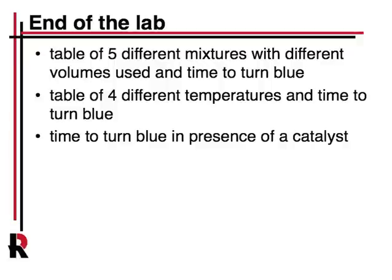By the end of the lab, you should have five different mixtures at the same temperature where you used different concentrations and recorded how long it took to turn blue. You should also have a separate table with four different temperatures and the time it took to turn blue, and finally the time it took to turn blue in the presence of a catalyst. Depending on your instructor, you may get a worksheet. Except for the Arrhenius equation, which requires a little manipulation, it should be a pretty easy and straightforward lab.